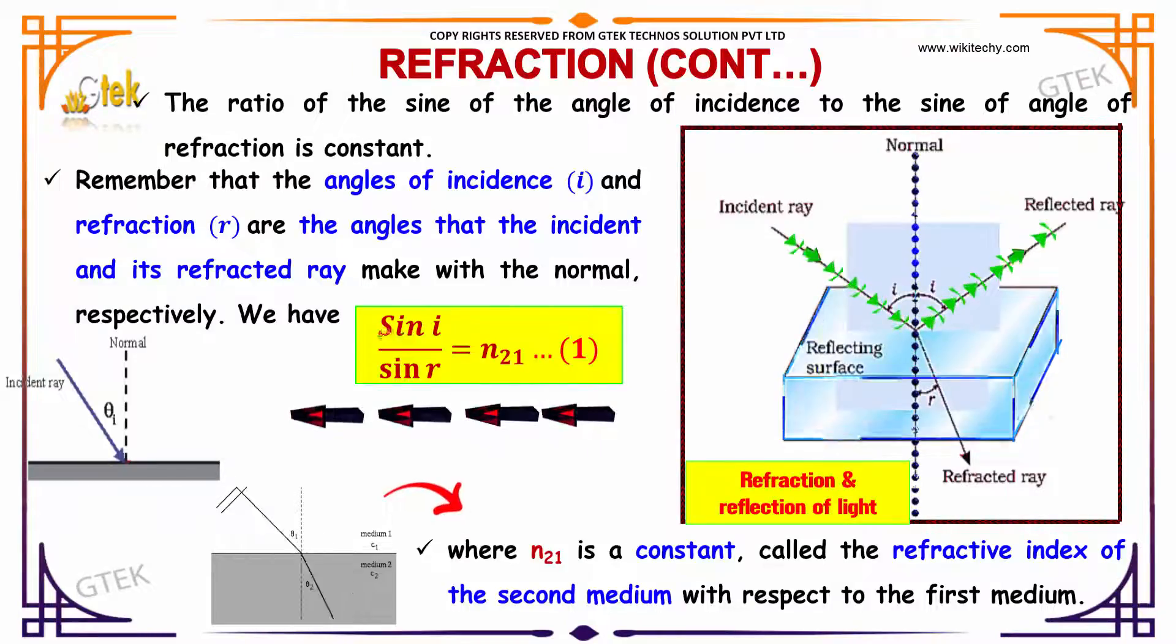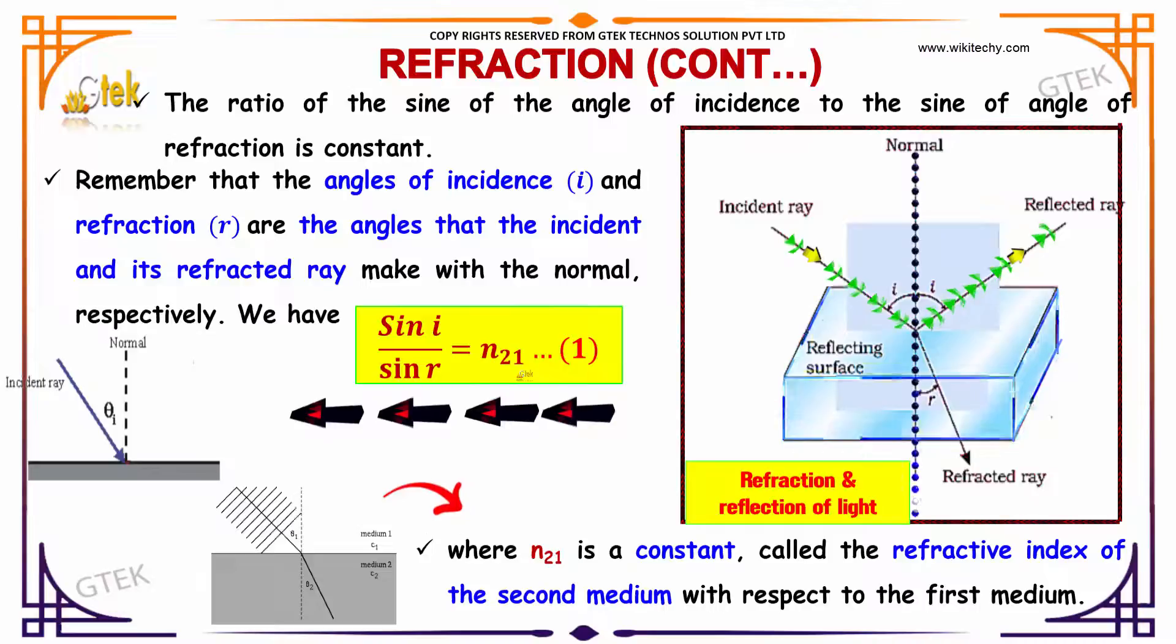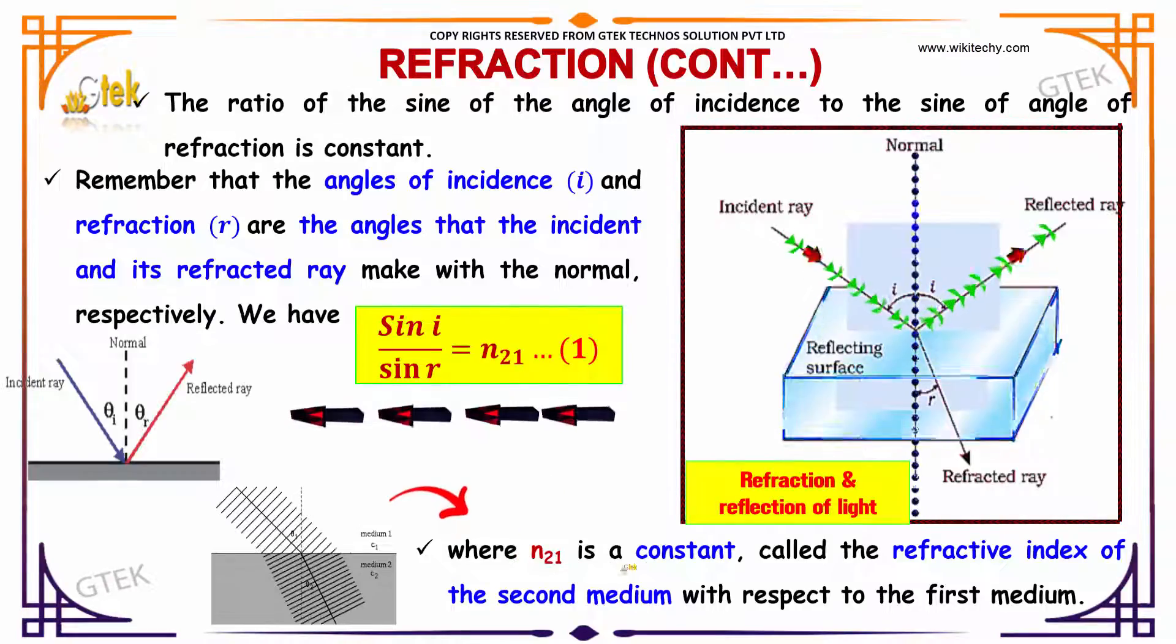We will be having sin i divided by sin r is equal to n21. That n21 is a constant called the refractive index of the second medium with respect to the first medium.